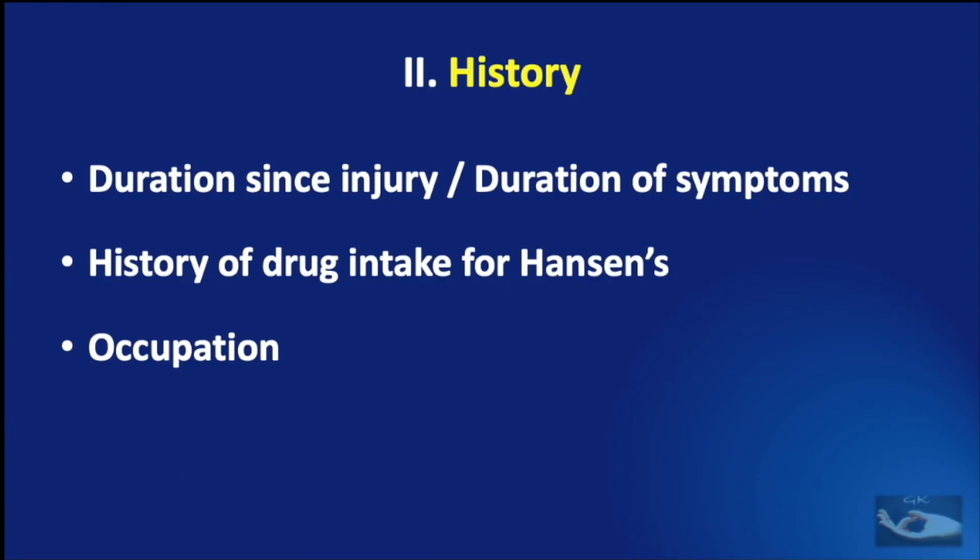When eliciting the history of a patient with suspected ulnar nerve injury or palsy, we need to consider the duration since injury or the duration of symptoms. A history of drug intake for Hansen's disease is also important in regions where it has been rampant, and the occupation of the patient should also be noted.